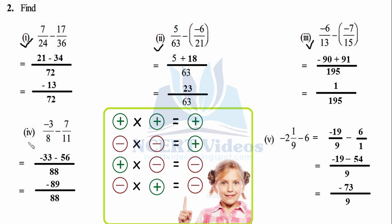Fourth part: −3/8 − 7/11. LCM = 88, since 11 × 8 = 88. (88/8) × 3 = 33, with negative sign: −33. (88/11) × 7 = 56, also negative. Same signs — add them and keep the sign: −33 + (−56) = −89. Answer: −89/88.